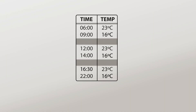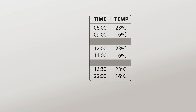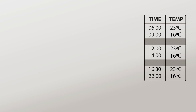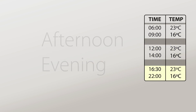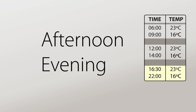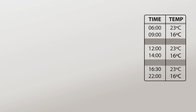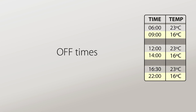The heating schedule is basically three events throughout the day. These are usually morning, lunchtime, and afternoon or evening. Each event has two programs. The first is the on time and temperature. The second is the off time and temperature. This is an example of a typical heating schedule.